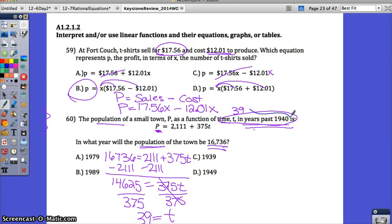The question asks me, in what year will the population be that amount? Well, it's going to be that amount in 39 years past 1940. What year will that be? We'll add 39 to 1940 and find out. Your answer is 1979. The correct answer is A.